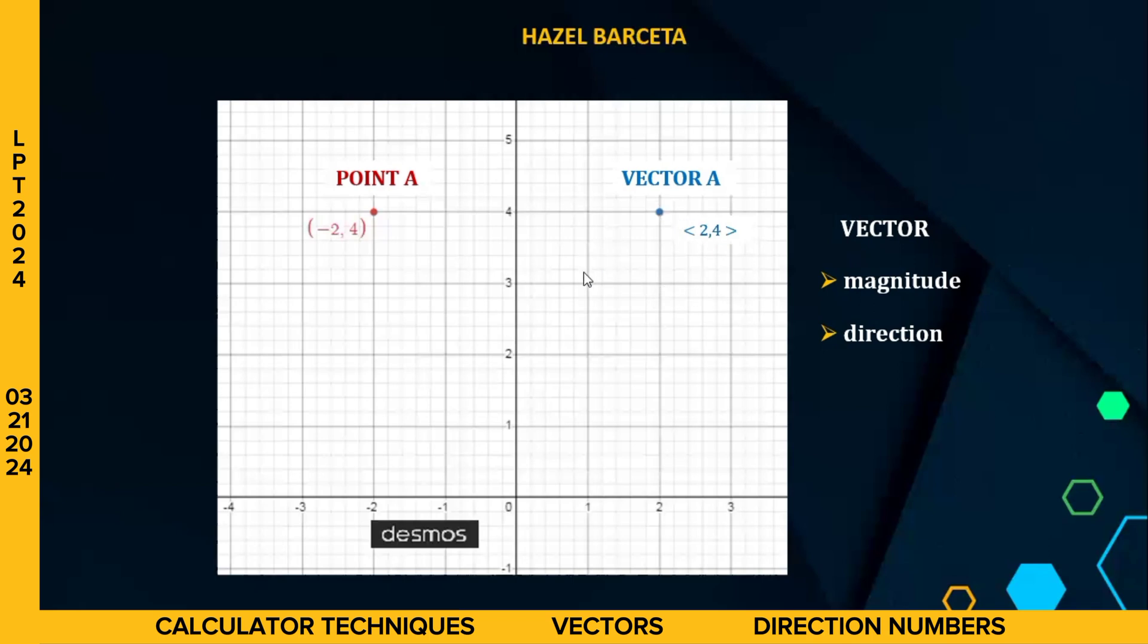So going back sa ating example, paano po ba natin maipapakita ang magnitude and direction? So here, nakapag-establish po tayo ng point 2, 4 from the origin, right? So we have here 0, 0 as our initial point. Then, from the origin, we move 2 units to the right for 2 dahil positive. So we have line here. And we move 4 places upward dahil positive po ang ating y.